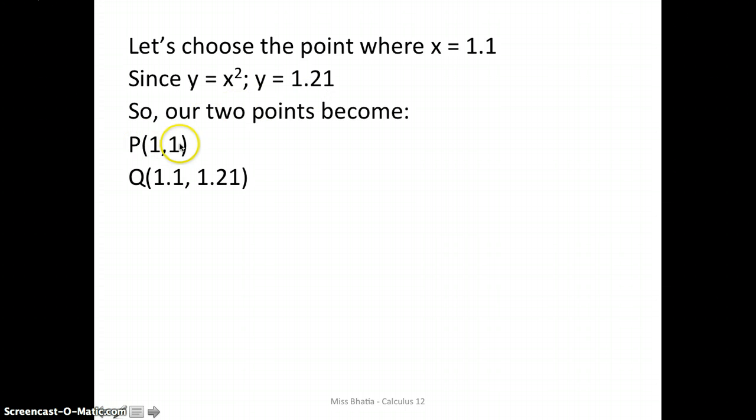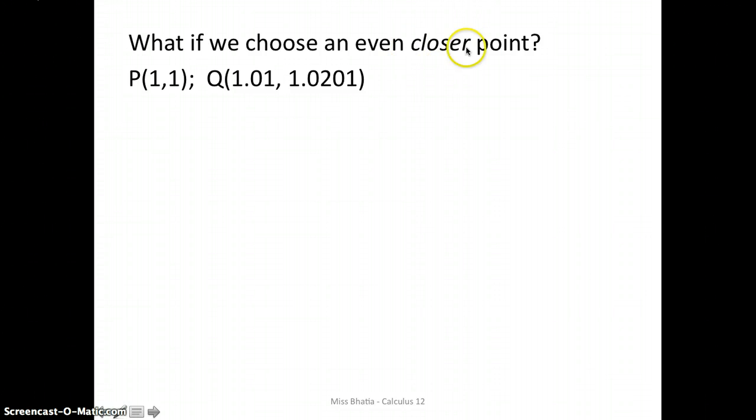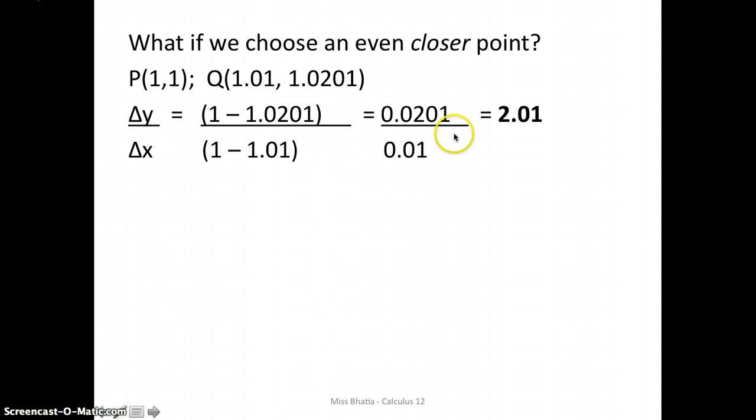So our two points become our original point P, 1, 1, and then our second point, 1.1 and 1.21. Now we can calculate the slope. So delta y over delta x, our first y minus our second y, over our first x minus our second x. And we get 2.1. This tells us that the slope of our tangent line is close to the slope of our secant line at 2.1. What if we get closer? We'll choose an even closer point. We'll choose where x equals 1.01, and y will equal 1.0201. If we calculate the slope of this, we get 2.01. So our even closer secant line point gives us a slope of 2.01.